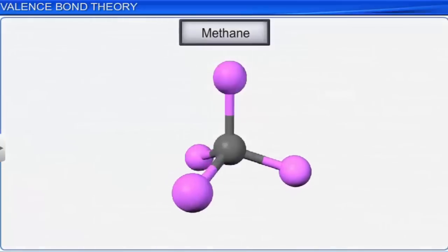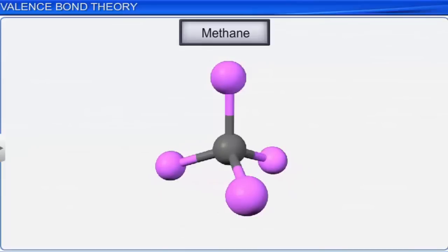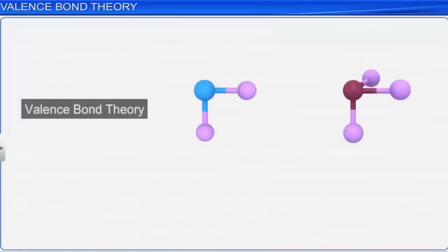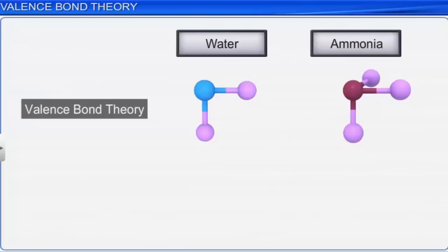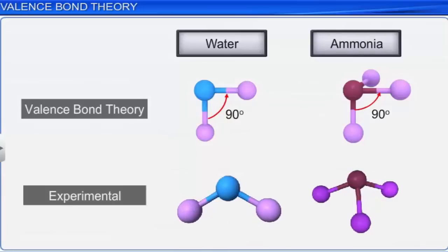Similarly, valence bond theory cannot account for the correct bond angles in water and ammonia. While it predicts a bond angle of 90 degrees in both, the experimental results show bond angles of 104.5 degrees and 107 degrees respectively. Thus, valence bond theory fails to account for the actual shapes of polyatomic molecules.